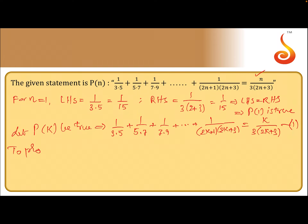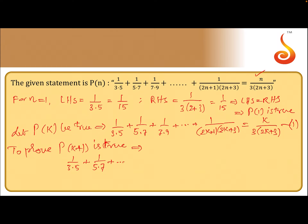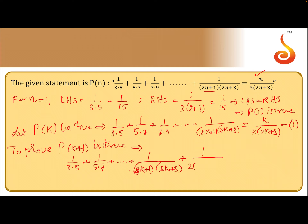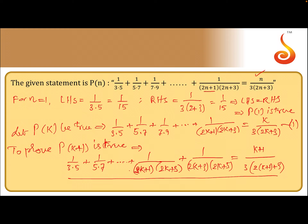Now we have to prove the statement for k+1 is true. That is, to prove: 1/(3×5) + 1/(5×7) + ... + 1/((2k+1)(2k+3)) + 1/((2k+3)(2k+5)) equals (k+1) divided by 3(2(k+1)+3), which is what we need to show.